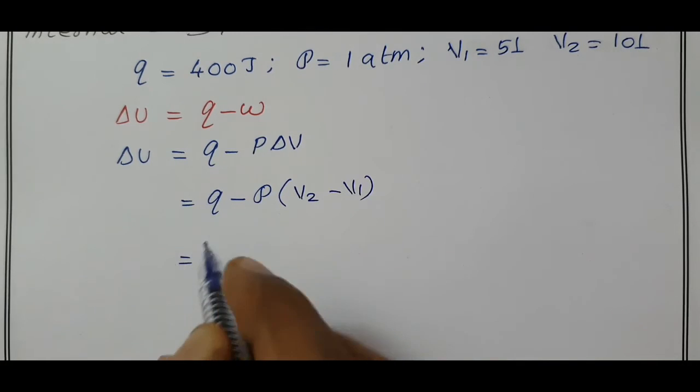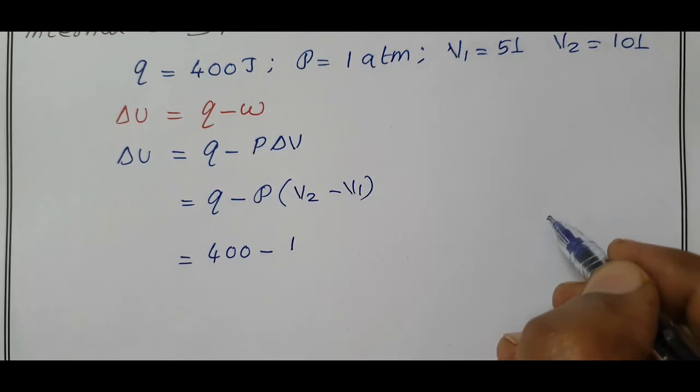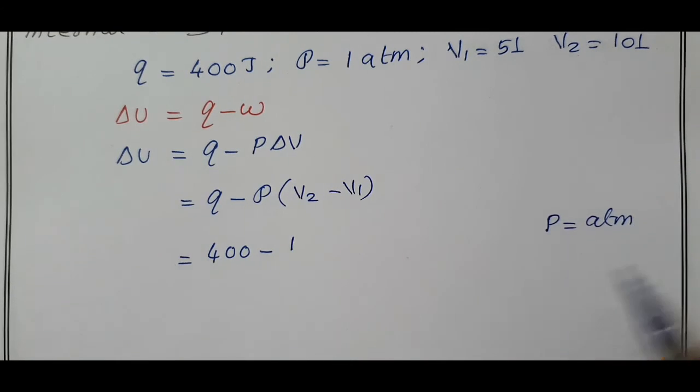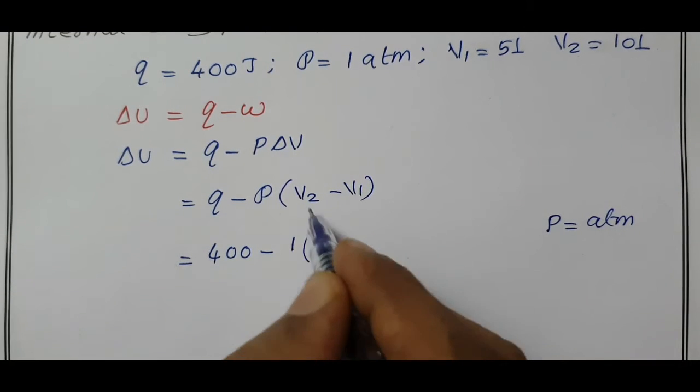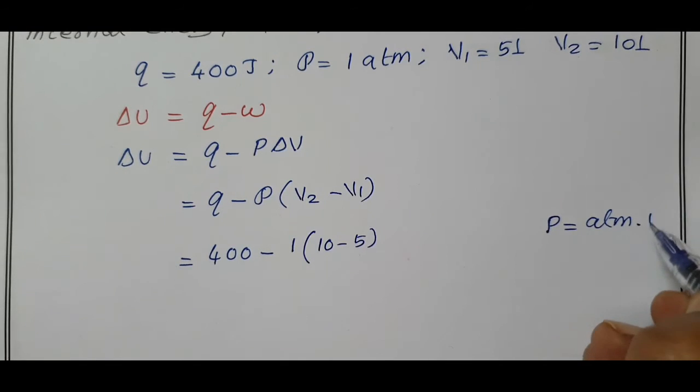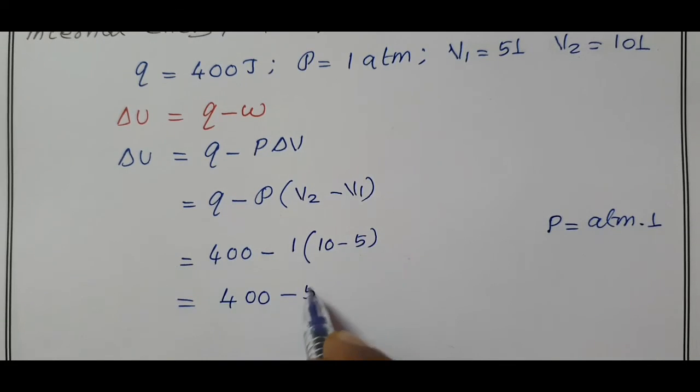So, Q minus pressure volume is 400 minus pressure volume, 1 atmospheric pressure, the pressure value equal to in unit 1 atm, and V2 minus V1, 10 minus 5. This is in liters. That is equal to 400 minus 5.